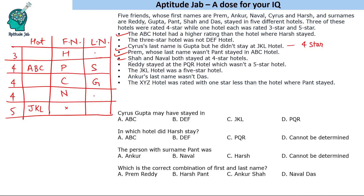Reddy stayed at the PQR hotel, which wasn't a five-star hotel — so Reddy could be in the three-star or four-star row; we don't know yet. We also have the clue that Ankur's last name wasn't Das. The XYZ hotel was rated one star less than the hotel where Punth stayed — this clue requires further analysis.